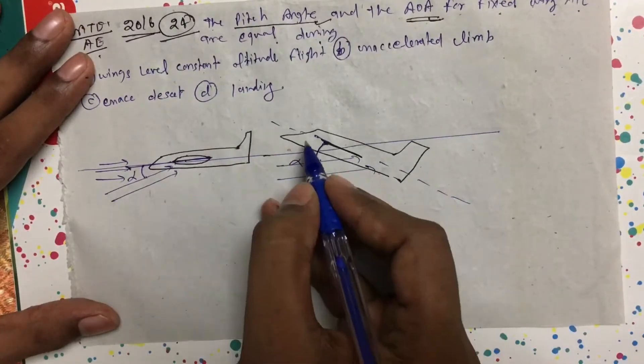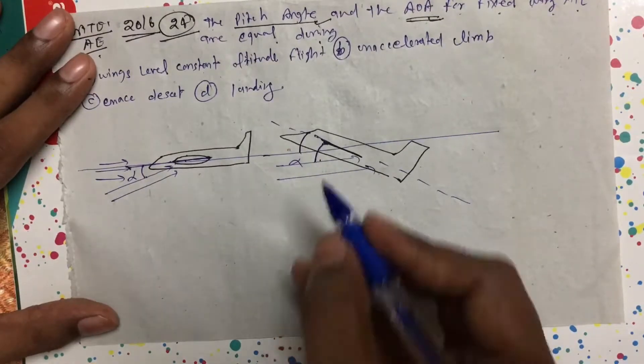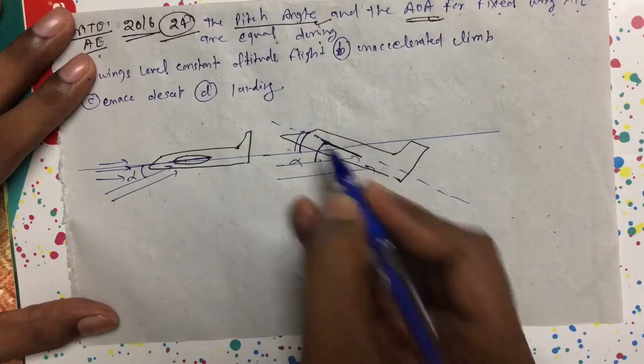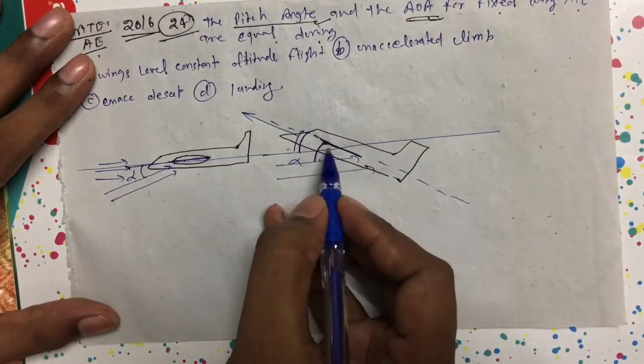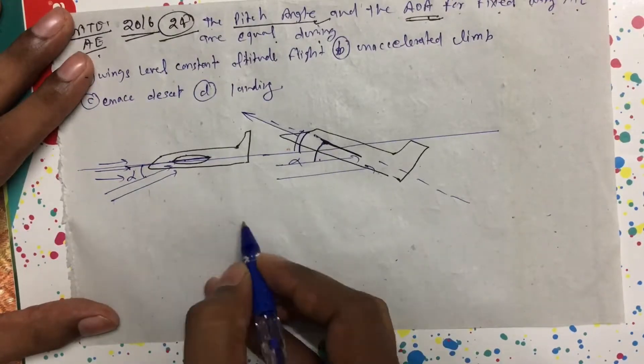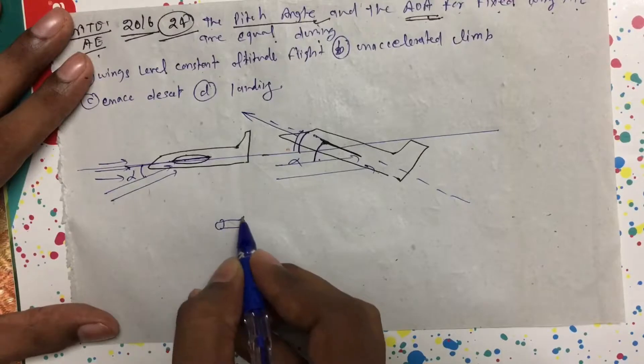So what will happen in case of pitch? Your airplane will climb because engines are mounted here. So if your engine is horizontal, the engine will go in this direction and the whole airplane will go in this direction.